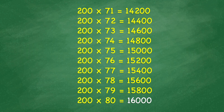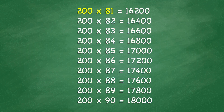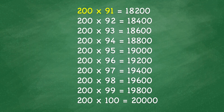200 times 80 equals 16,000. 200 times 81 equals 16,200. 200 times 82 equals 16,400. 200 times 83 equals 16,600. 200 times 84 equals 16,800. 200 times 85 equals 17,000. 200 times 86 equals 17,200. 200 times 87 equals 17,400. 200 times 88 equals 17,600. 200 times 89 equals 17,800. 200 times 90 equals 18,000.